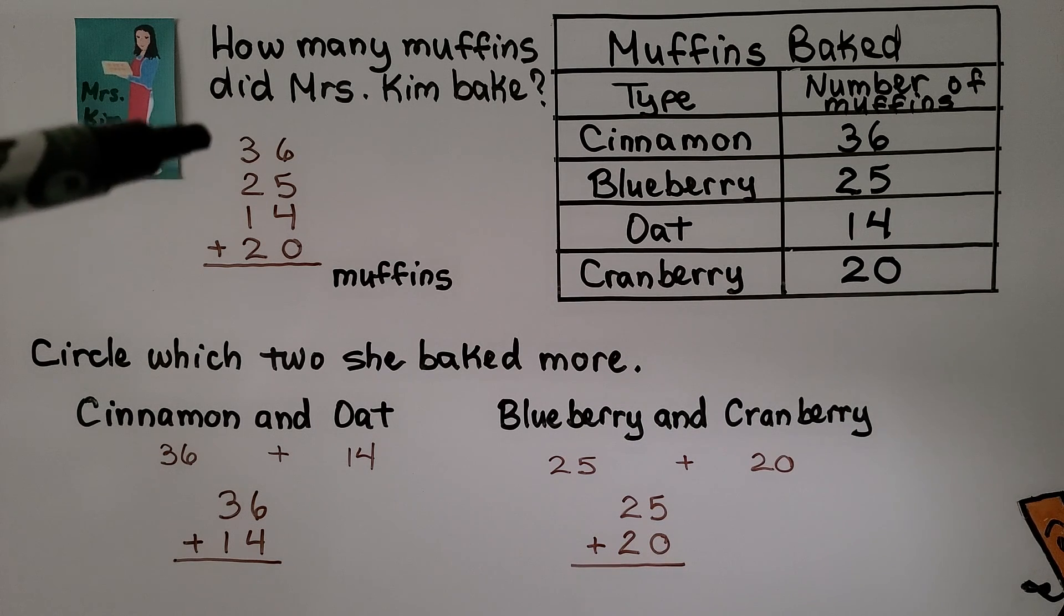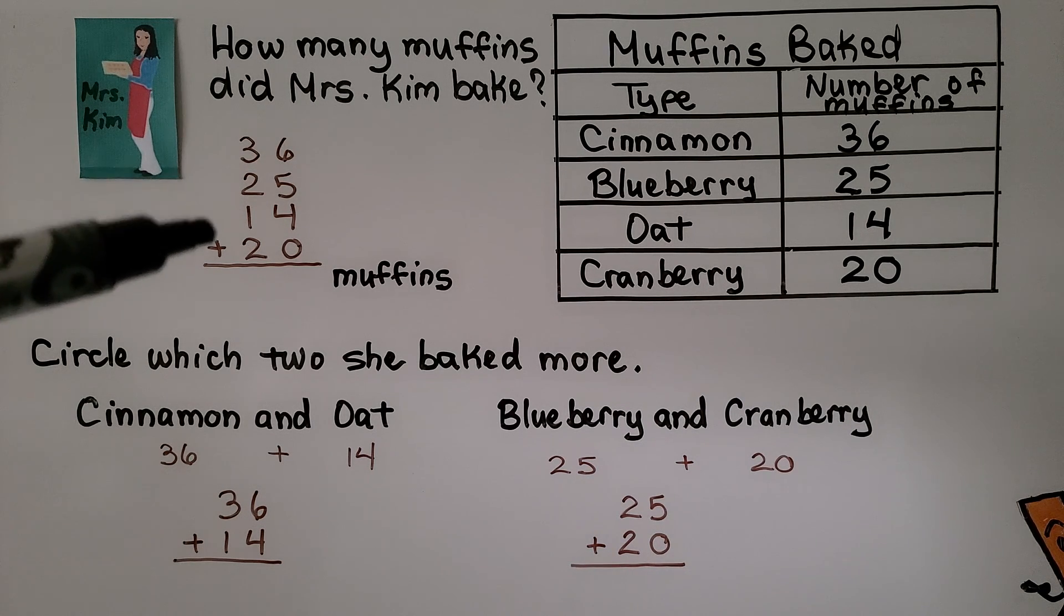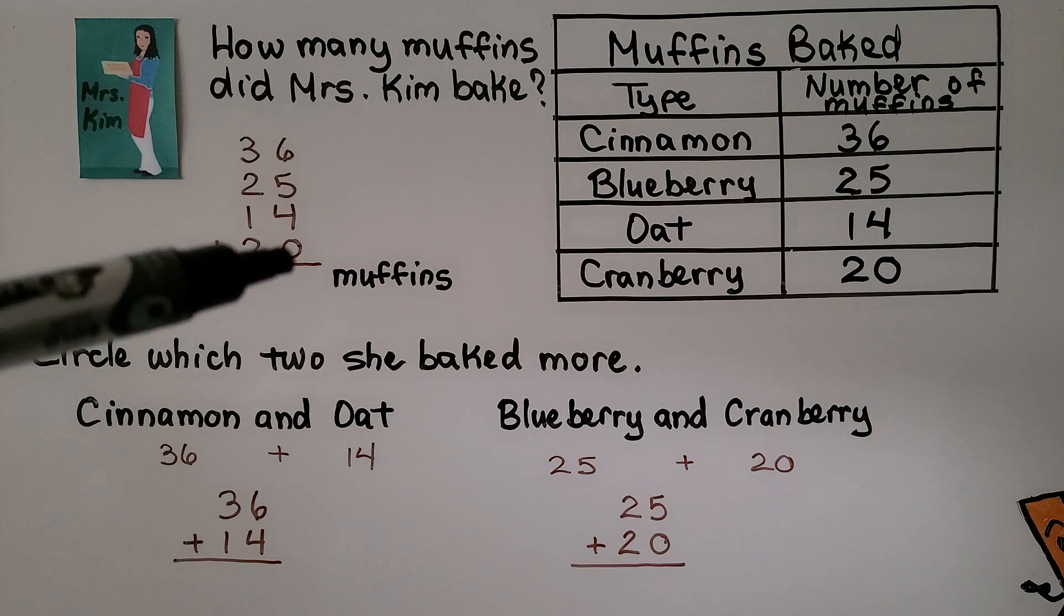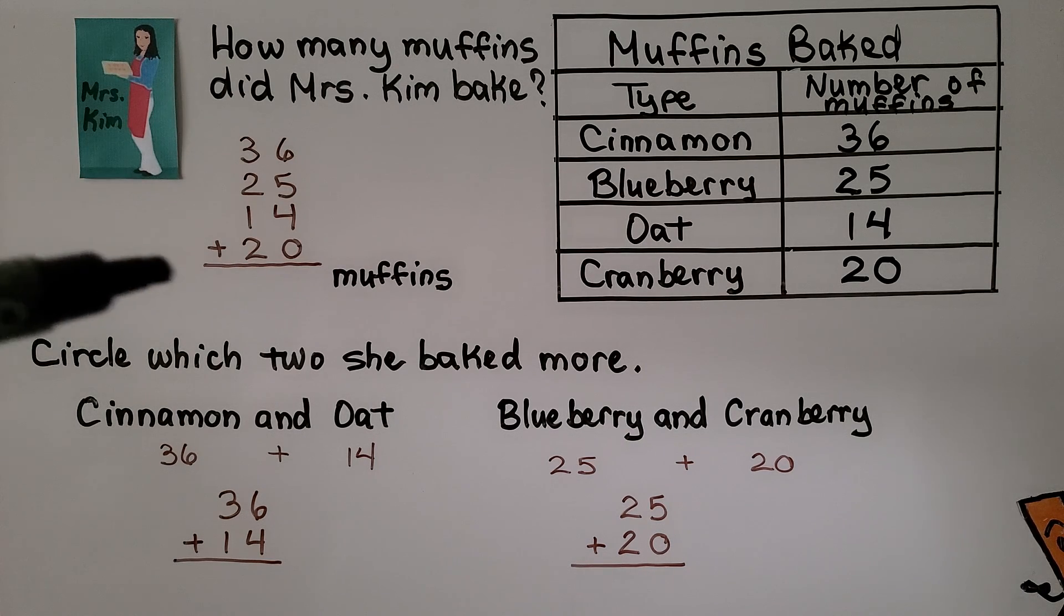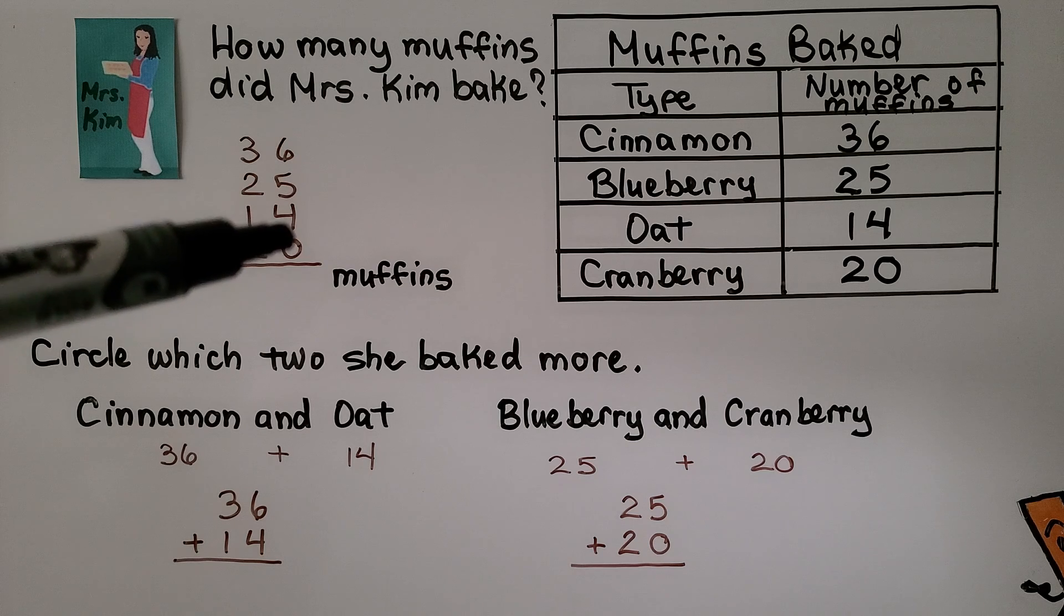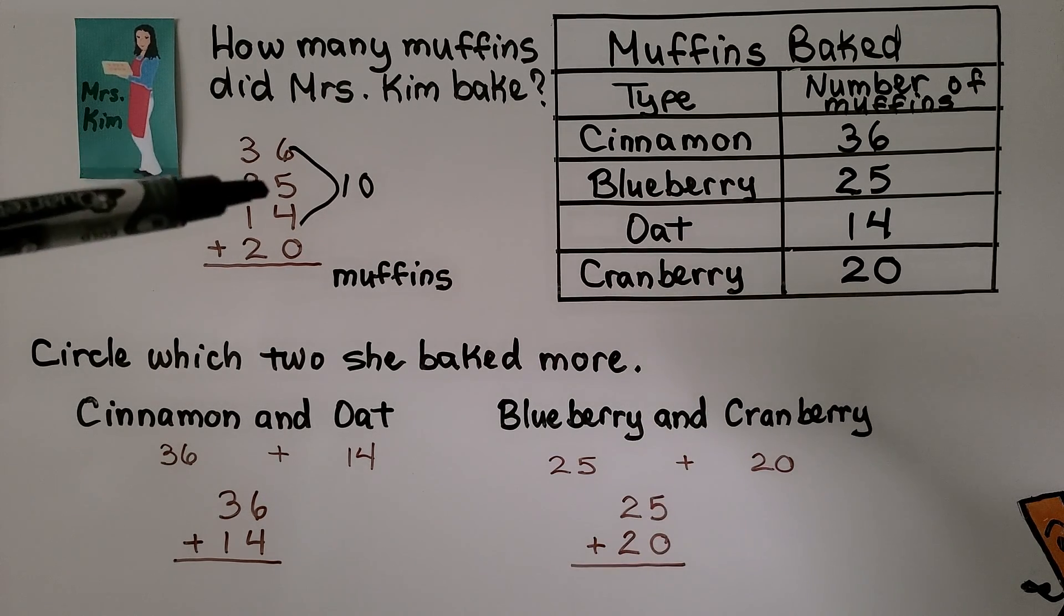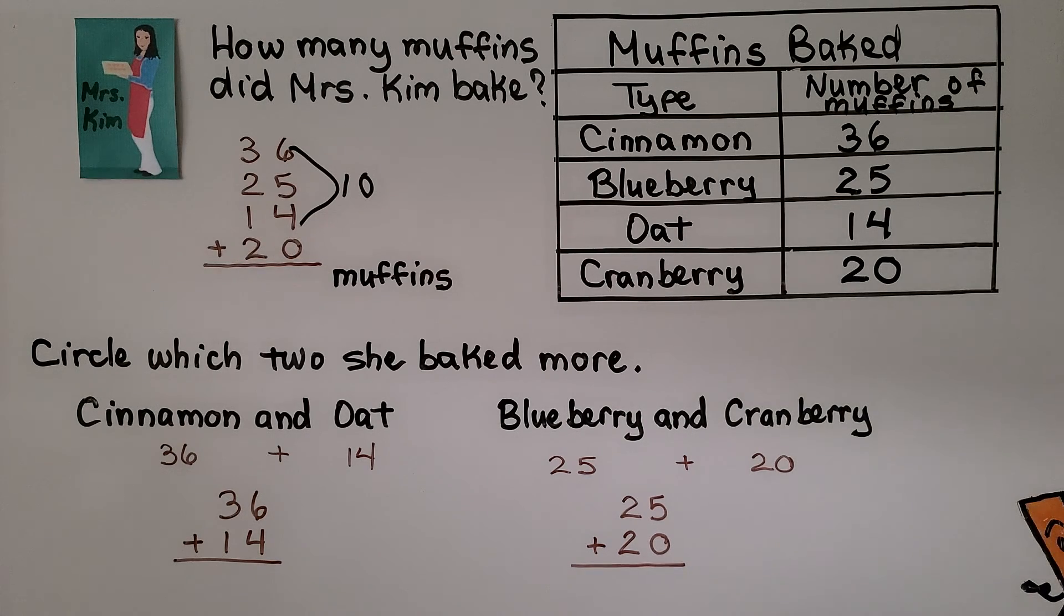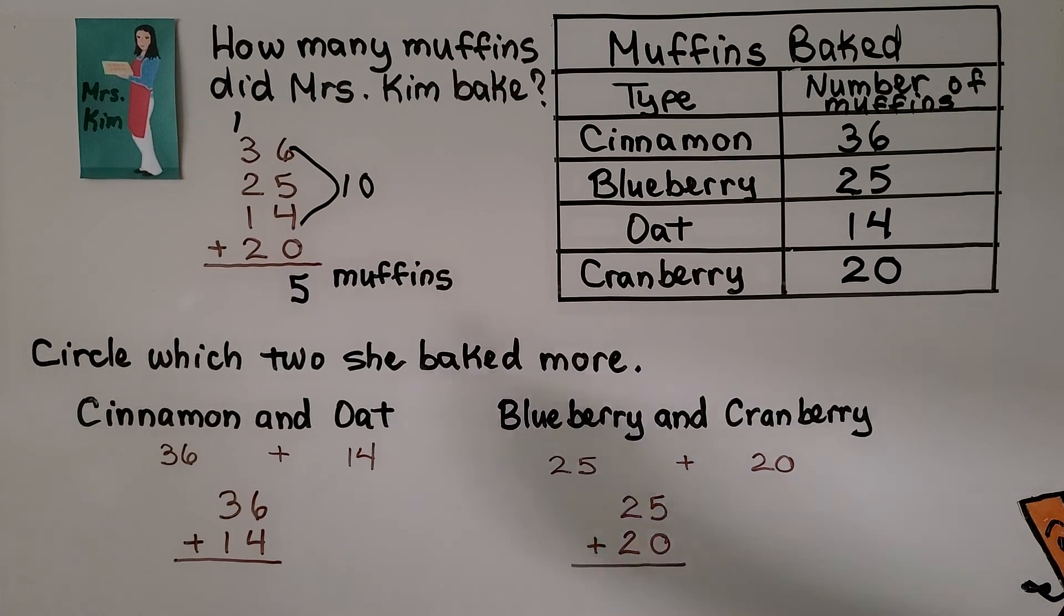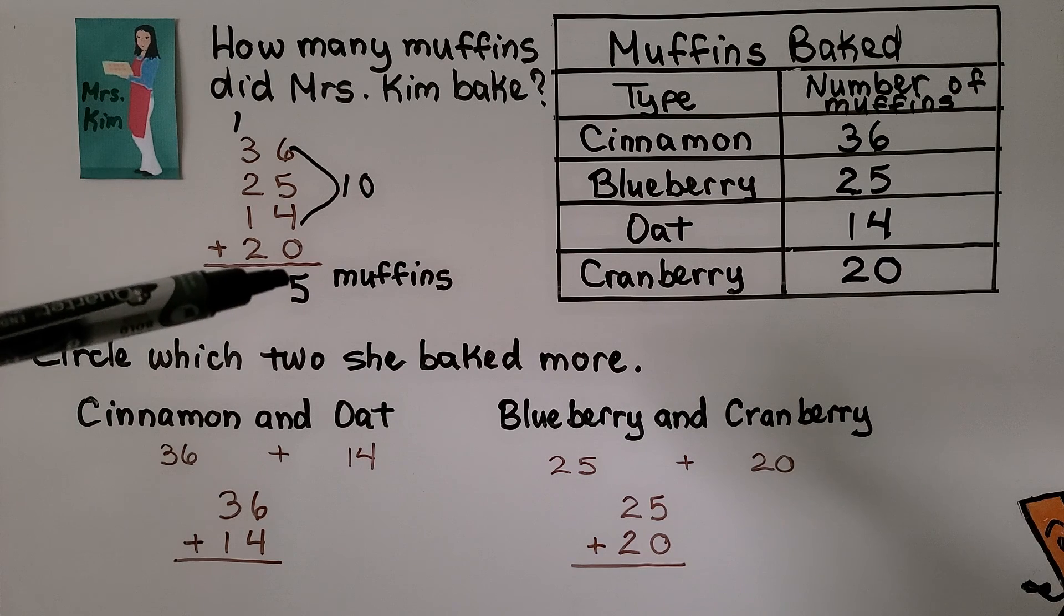We stack the numbers: 36, 25, 14, 20, so they're in the right column, ones and tens. I see a 6 and a 4. That makes 10. We can add the 5. That's 15. Plus zero is still 15. 15 is 1 ten, 5 ones.